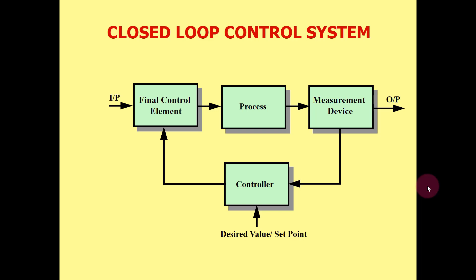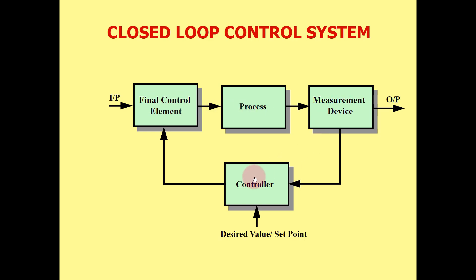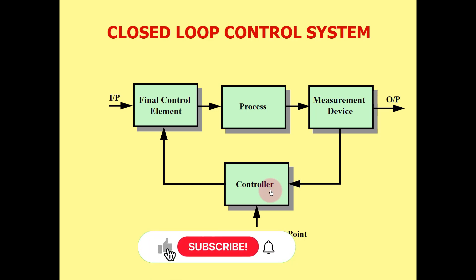Today I am going to discuss the basic introduction of process control theory. The picture showing here is about the closed-loop control system, which consists of different blocks: final control element, process, measurement device, and controller. The controller can be a positioner, VFD variable frequency drive, and so on.